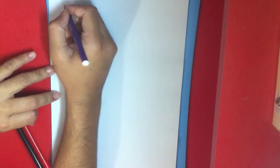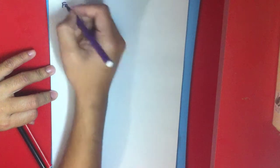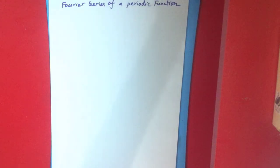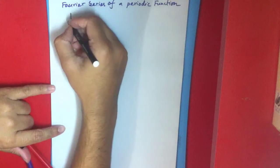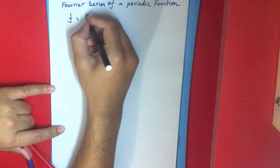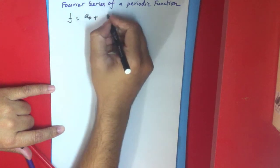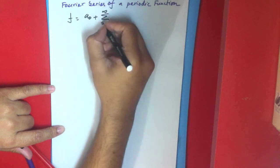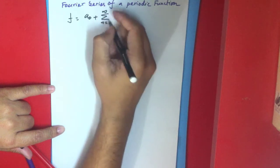Introduction to Fourier series for periodic functions. The equation is: f(x) = a₀ plus summation from n equals 1 to infinity of aₙ cos(nπx/L) plus bₙ sin(nπx/L).